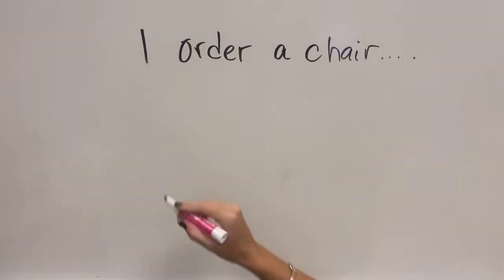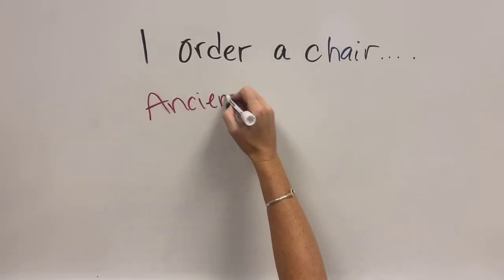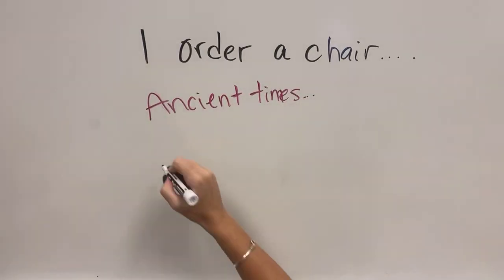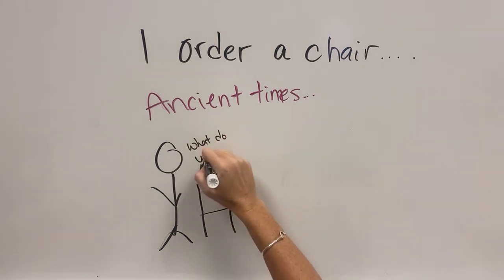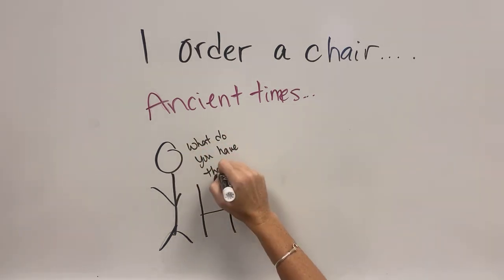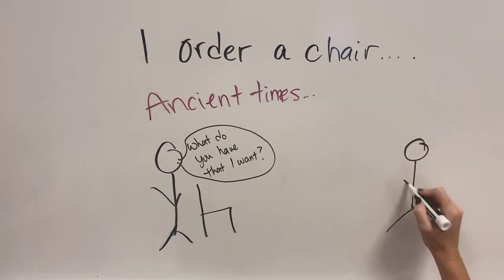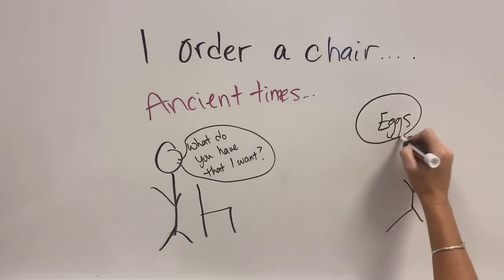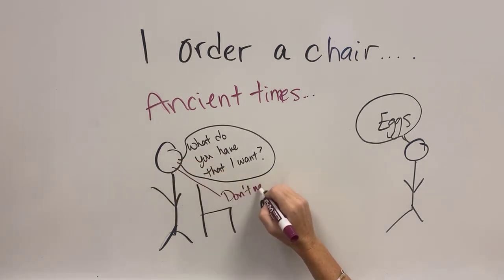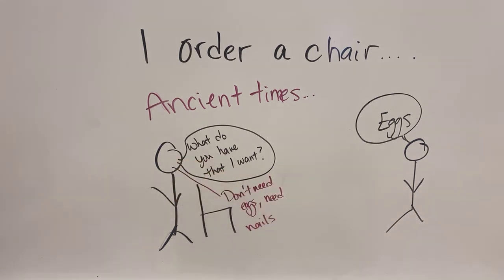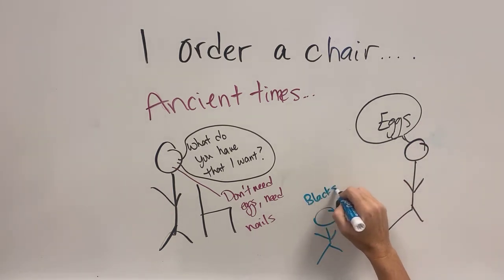Let's say that I need a chair. In the ancient times, I would contact a person who would make me a chair. And then he would say, what do you have that I want? And I would say, well, I have chickens, so would you like some eggs? And they would say, no, I don't need any eggs, I need nails. So then I would go, oh man, how am I supposed to do that?